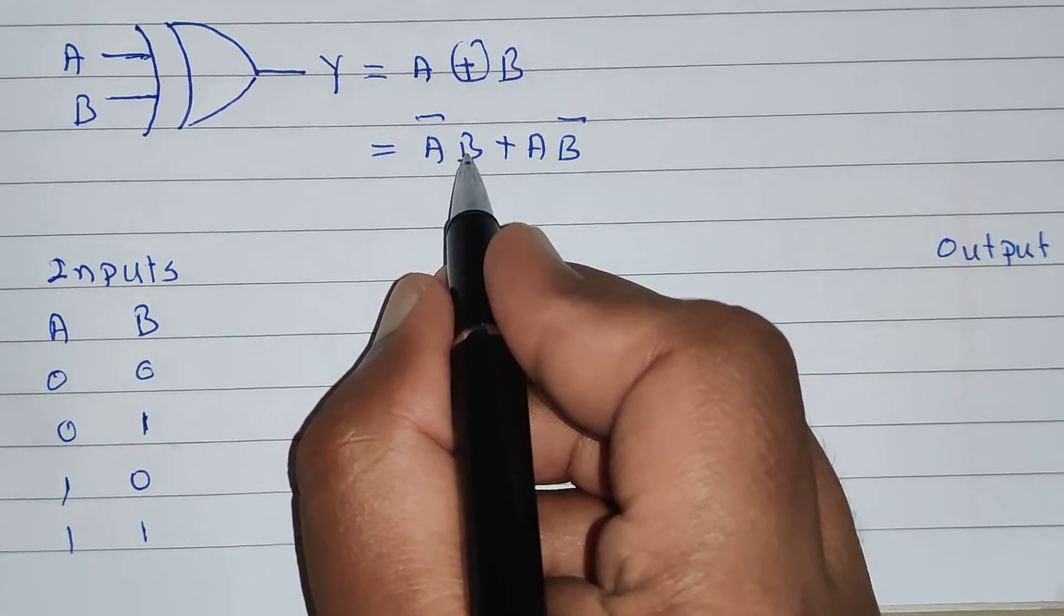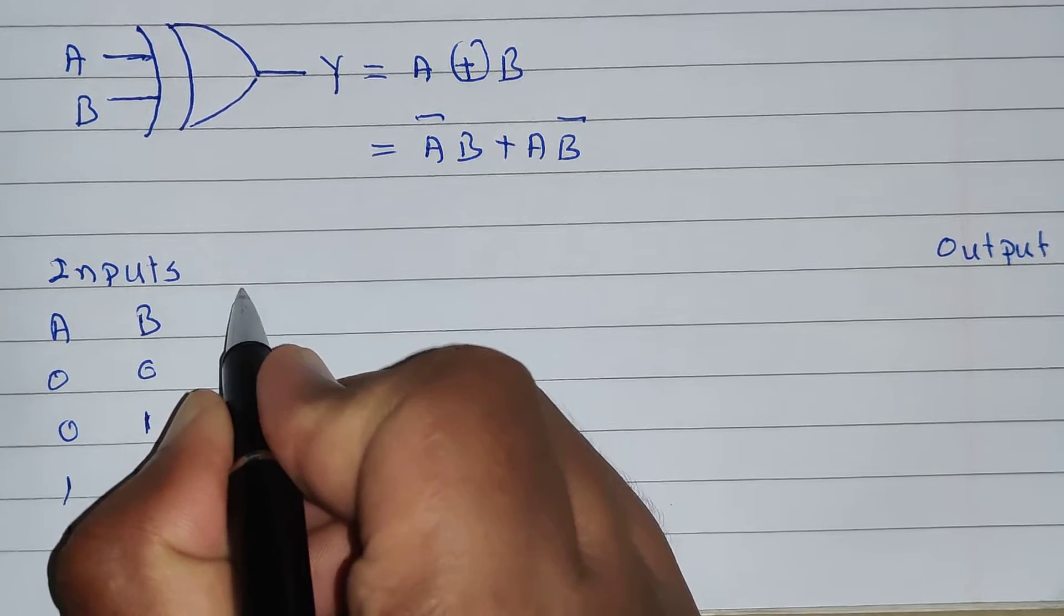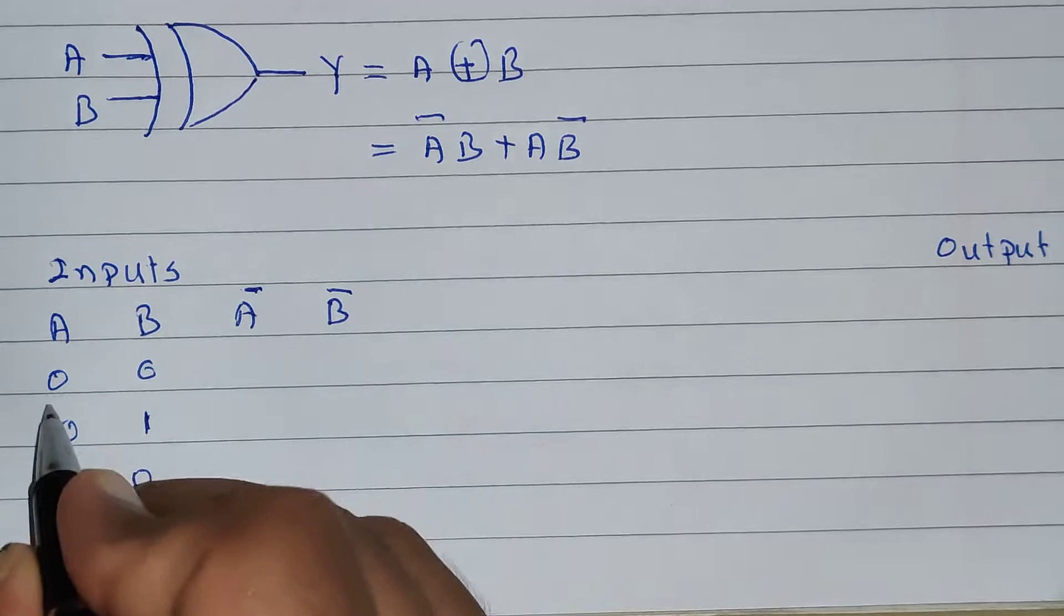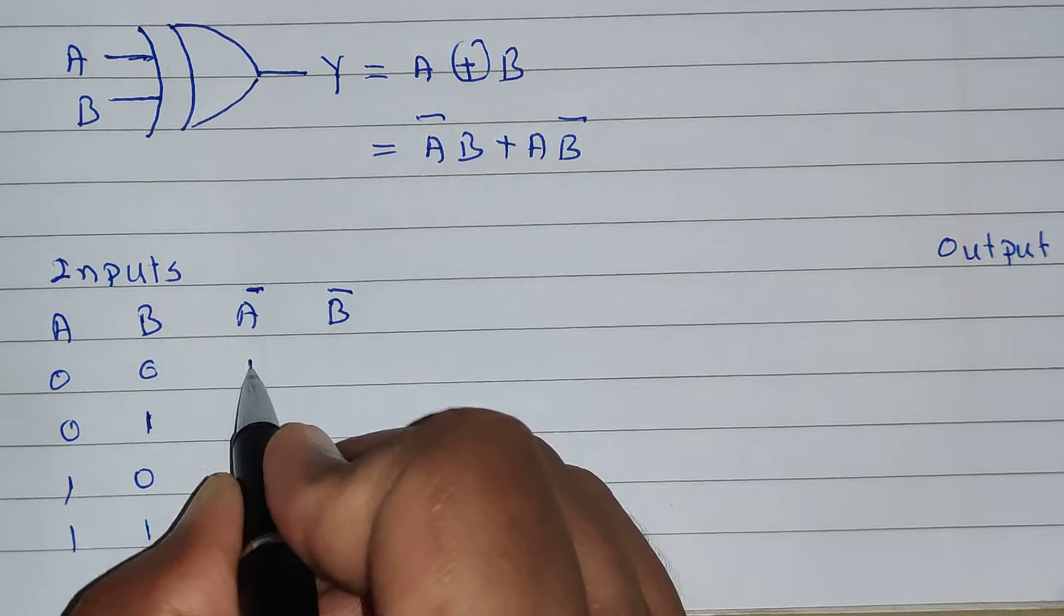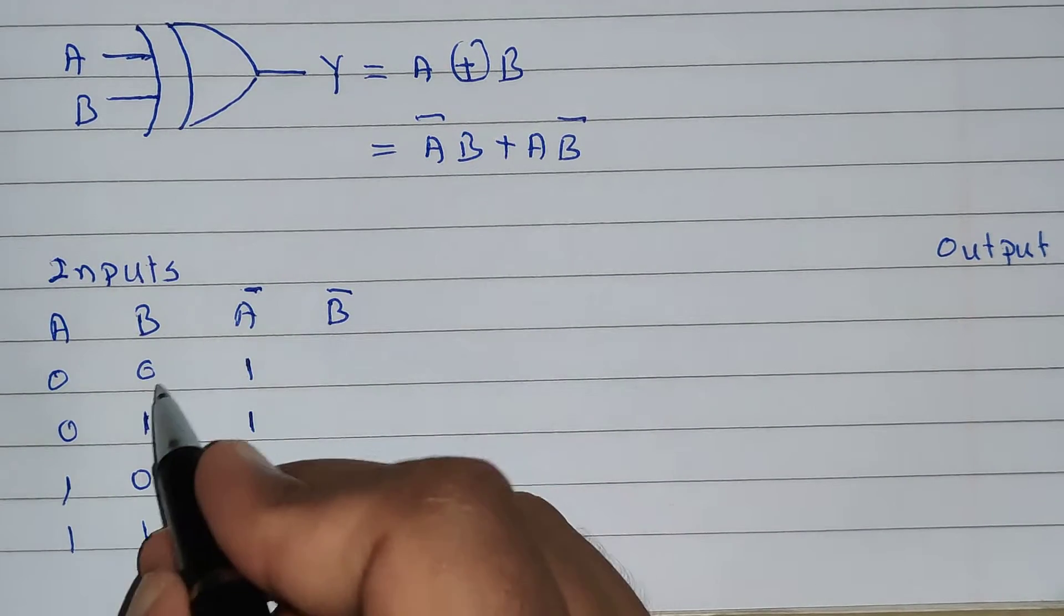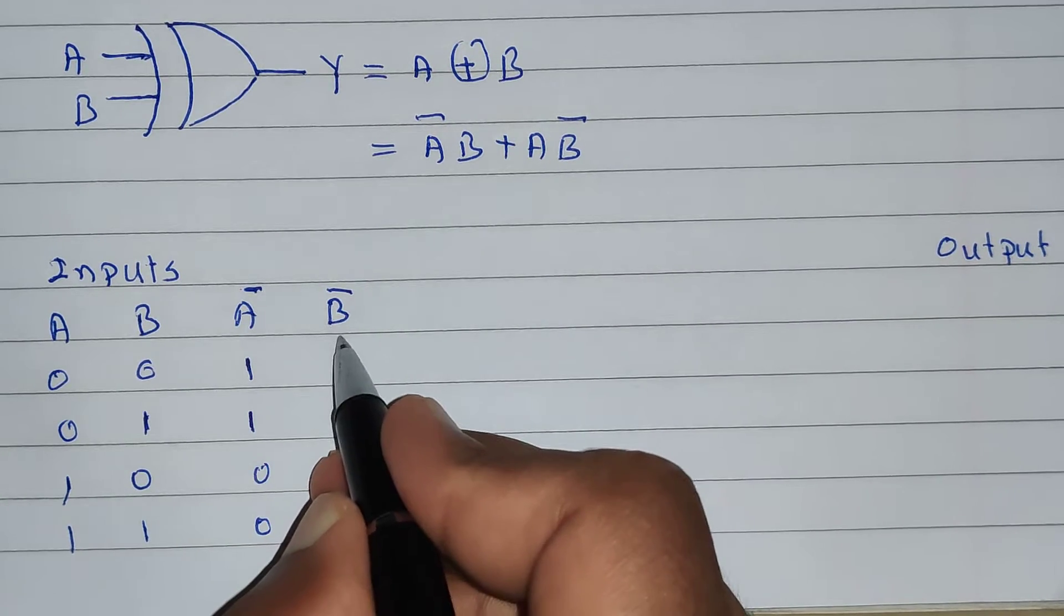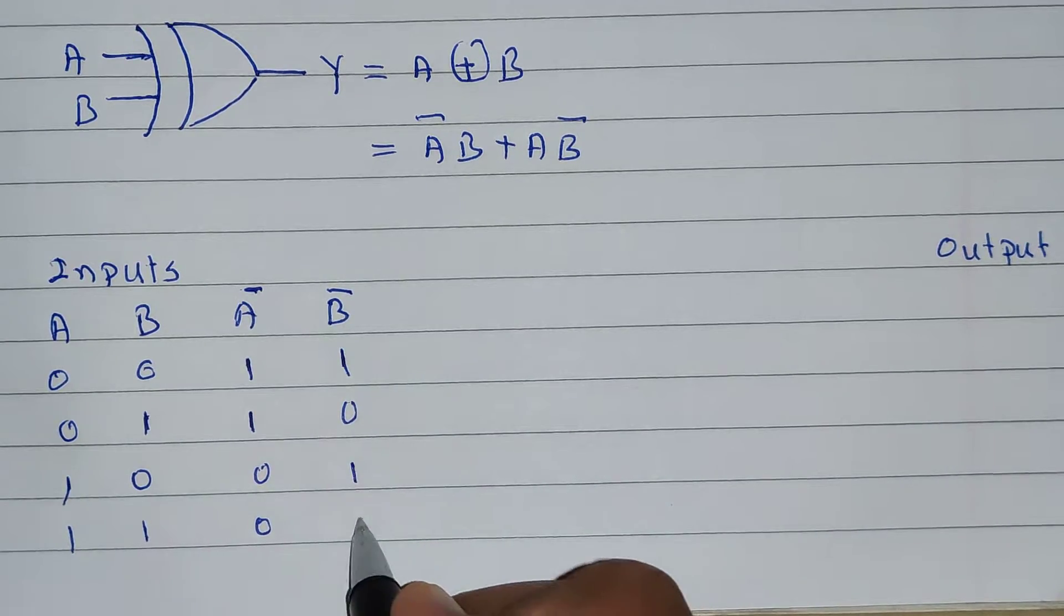Now, to perform A bar B plus A B bar, we will require A bar. We will require B bar. If A is 0 0 1 1, then A bar will become 1 1 0 0. If B is 0 1 0 1, then B bar will become 1 0 1 0.